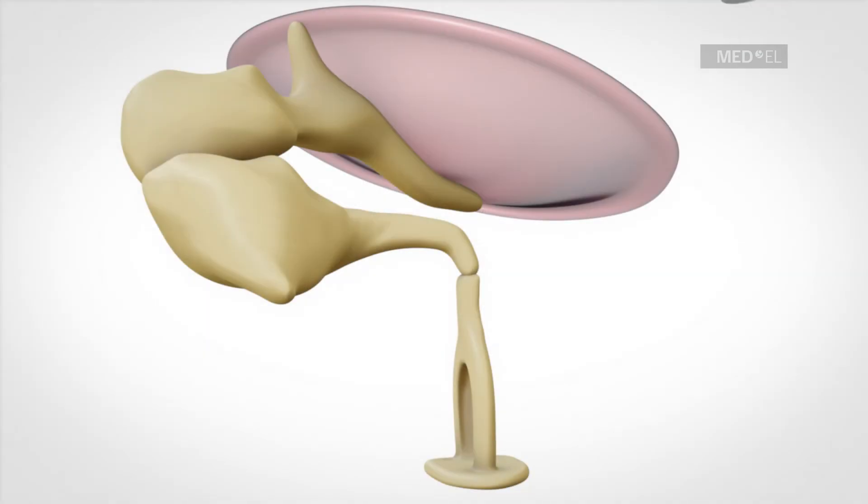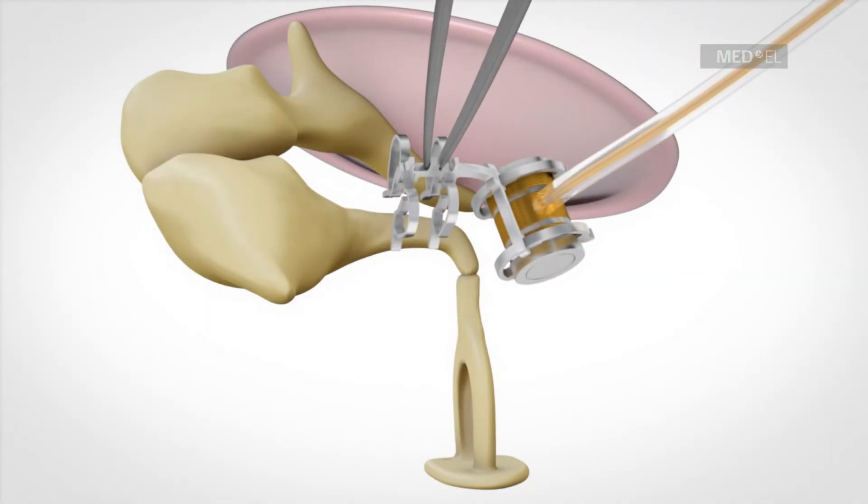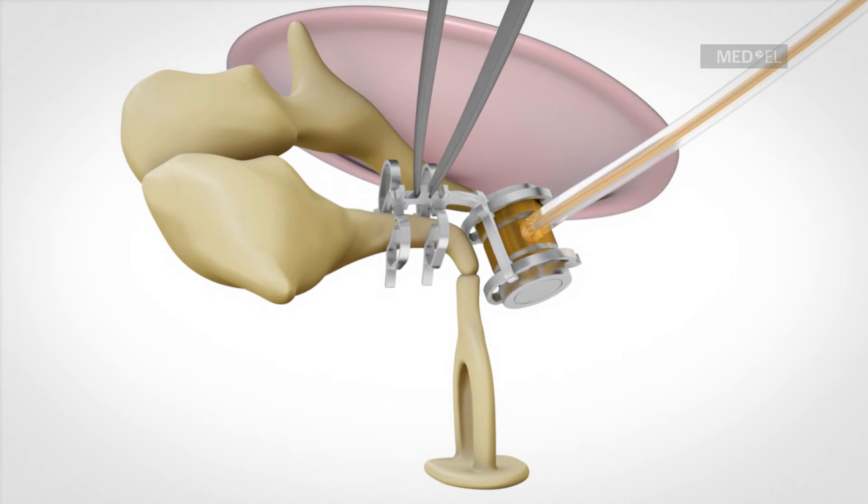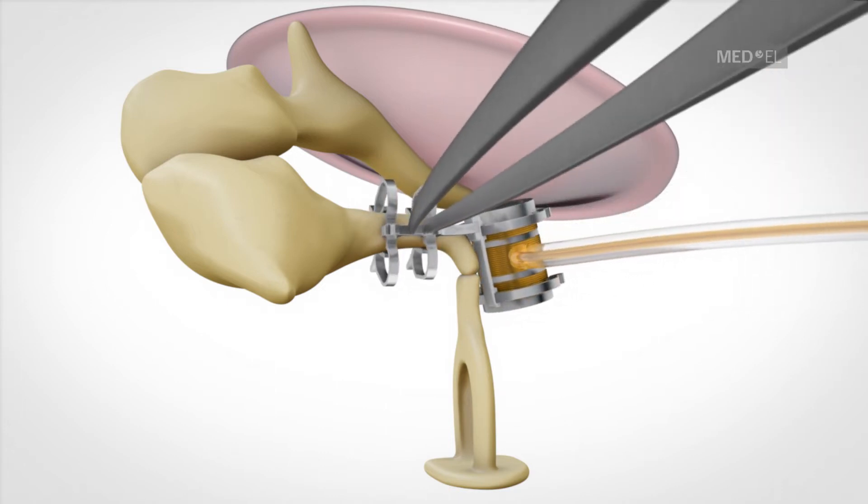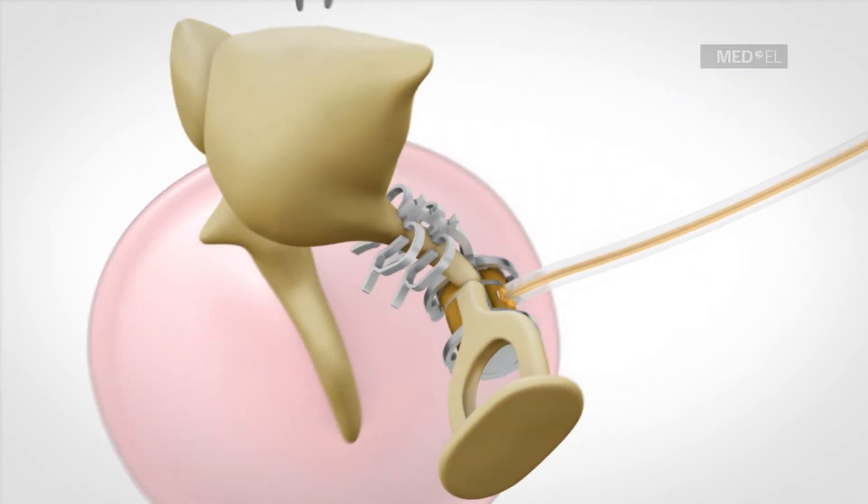The INCUS LP coupler is attached to the long process of the INCUS. It has an improved coupling and an easier handling without the need for crimping.